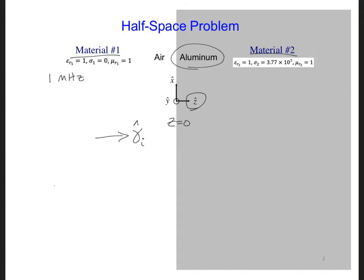And gamma I here is equal to alpha 1 plus j beta 1 because we're in material number 1. The plane wave incident on the aluminum has electric and magnetic field components that will be perpendicular to the direction of propagation. So we could define the electric field as pointing in the x direction or the y direction or some combination of the two.